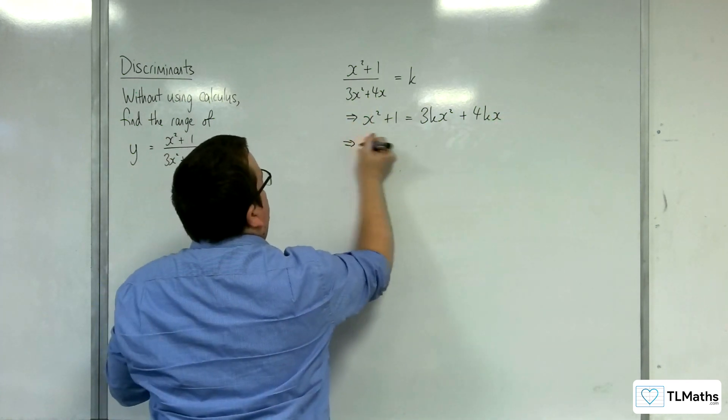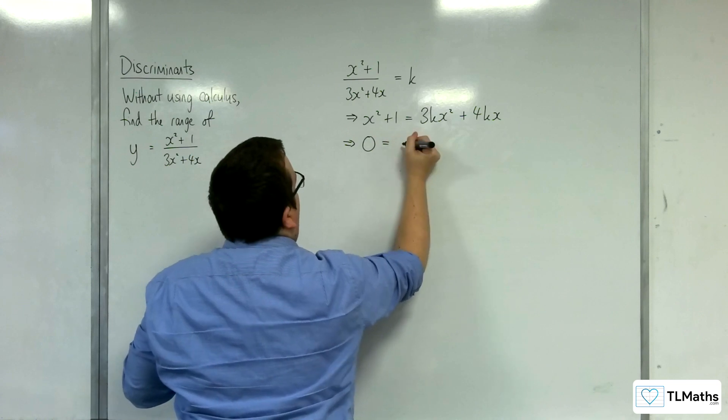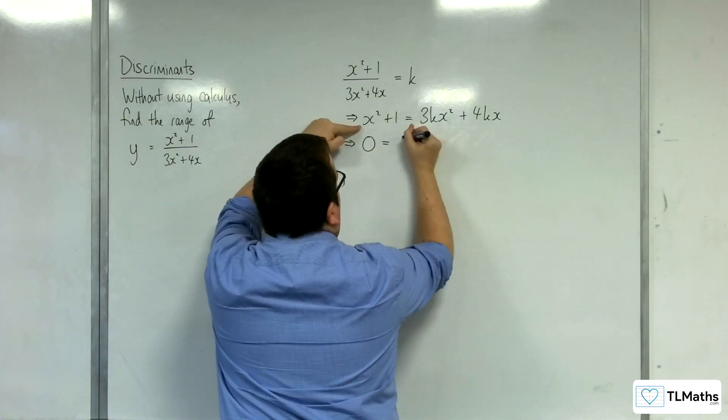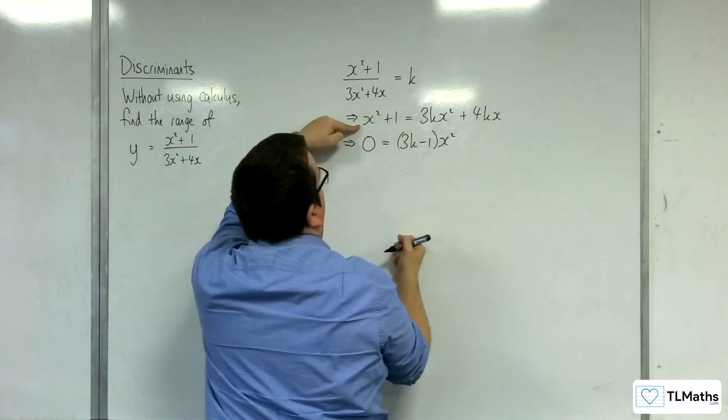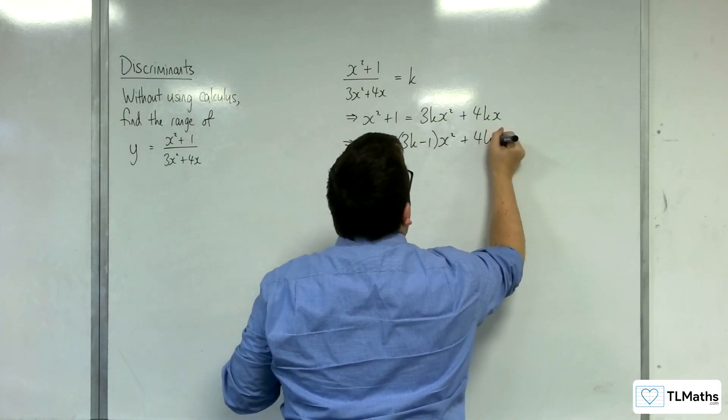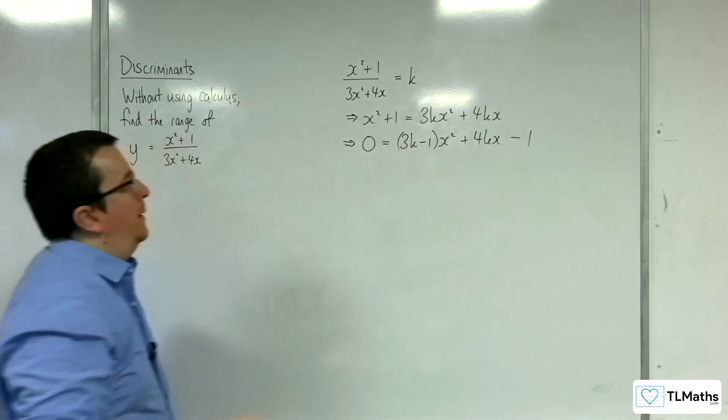And I'm going to move everything onto the right-hand side to get 0 equals. So I'm going to subtract x squared from both sides. So I'd now have 3k take away 1x squared. I've got the 4kx and I'm subtracting 1 from both sides as well.